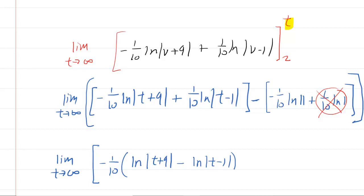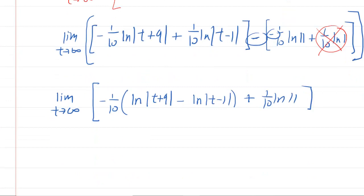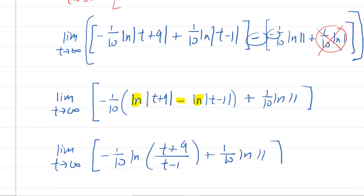And then we still have the result over here. This minus and this minus are going to make a plus. So you'll have plus 1/10 natural log of 11. Now let's consider log properties. We have a logarithm minus a logarithm. We recall from pre-calculus that that can be re-expressed as a quotient. So you'll actually have negative 1/10 times the natural log of t plus 9 over t minus 1. Notice we don't need the absolute values here because t is approaching positive infinity. So it's guaranteed to be positive.